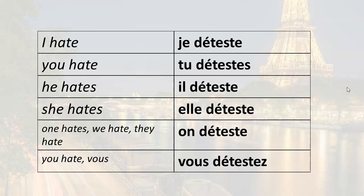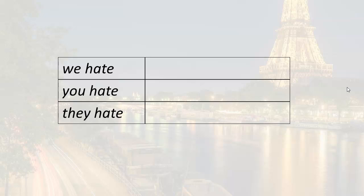In this lesson, we are going to learn the plural forms. We hate. Remember, it's just a matter of adding the ending to the root. So the ending for we is O-N-S, on. So we hate, nous détestons.